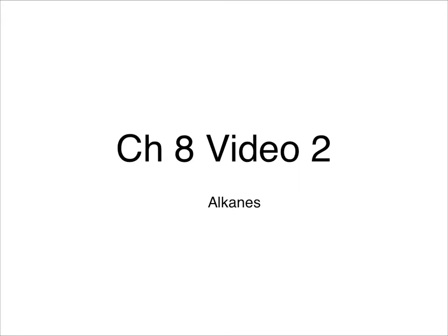In this video we're going to talk about the first set of hydrocarbons called alkanes. The three types of hydrocarbons have very similar names, differing by just one letter: alkanes, alkenes with an E, and alkynes with a Y. Alkanes have all single bonds, alkenes have a carbon-carbon double bond somewhere in the molecule, and alkynes have a triple bond. That's a quick preview of where we're going with these different types.